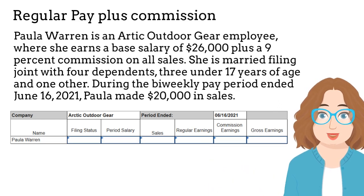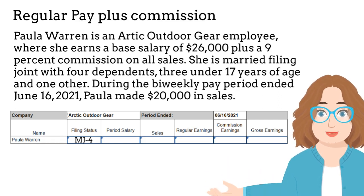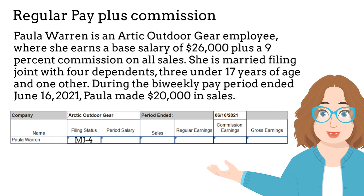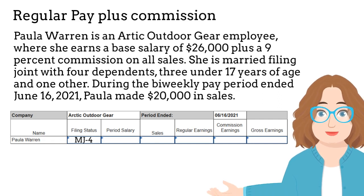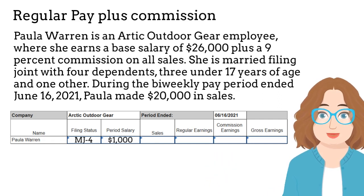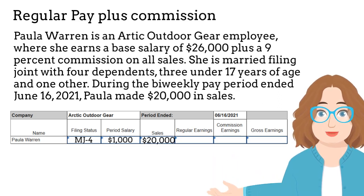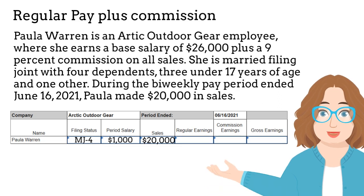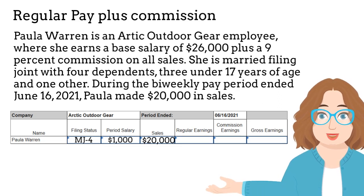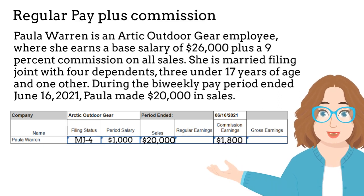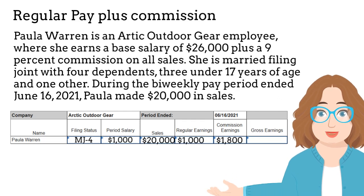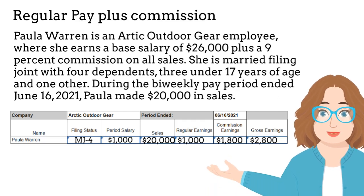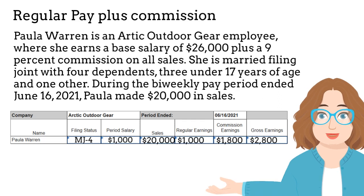First, we need to enter Paula's filing status, which is married filing jointly with four dependents, abbreviated MJ-4. Next, let's enter the period wage. This is the annual base salary of $26,000 divided by 26, because Paula is paid bi-weekly. The result is $1,000. Now we can enter the sales amount into the next column. We'll calculate the commission by multiplying $20,000 by 9%, which is $1,800. Finally, we'll add the regular bi-weekly pay of $1,000 and the commission. The result is $2,800.